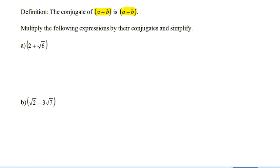So in this case, if I multiply by 2 minus root 6 and multiply that through, I'm going to get 4 minus 2 root 6 plus 2 root 6 minus root 36, which is 4 minus 6 equals negative 2, no square roots in sight.